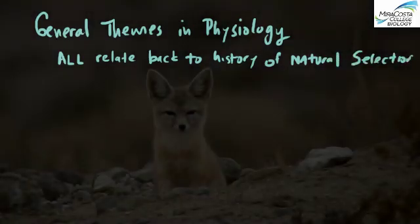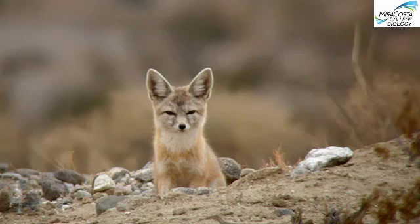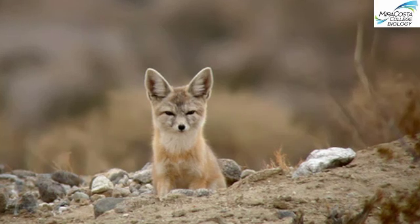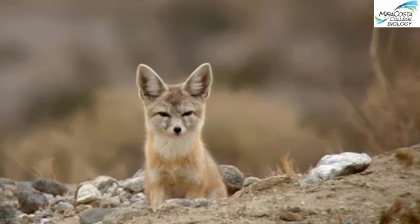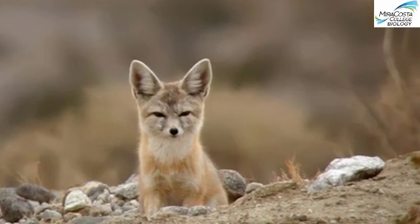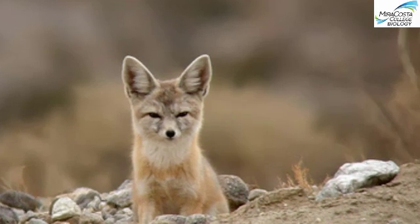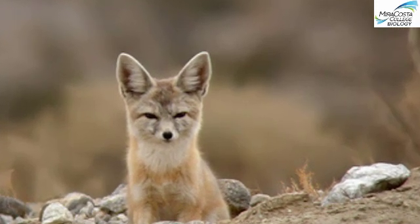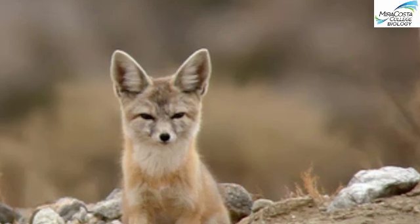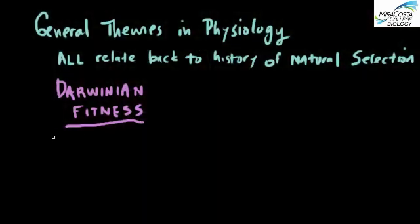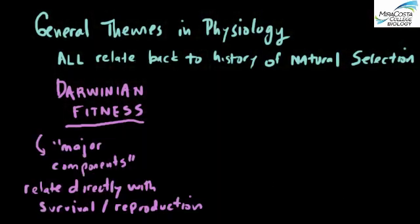Let's say you're studying a wild population of foxes—the desert kit fox in southeastern California. The reason that this fox is here at all is because each of its ancestors was successful in surviving and reproducing, and their specific phenotypic traits contributed to this success. We refer to this type of success generally as Darwinian fitness, and there are several major components of fitness—things that are directly and undeniably related to survival and reproduction.